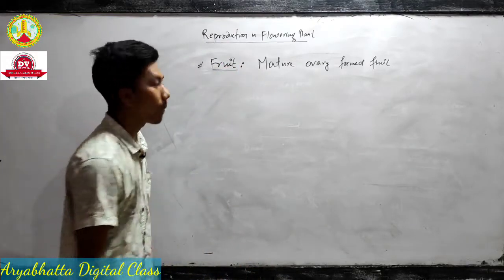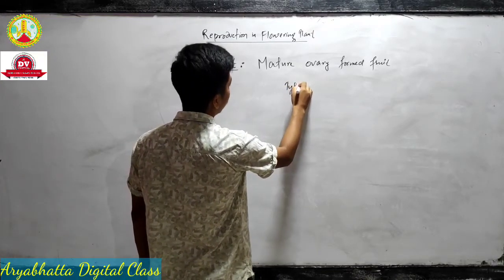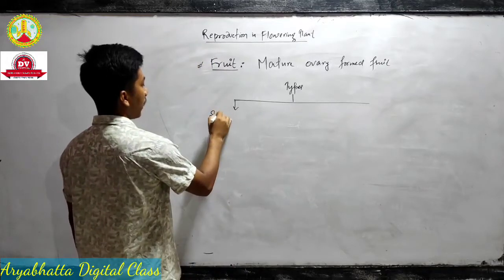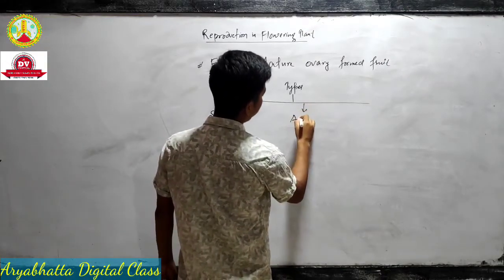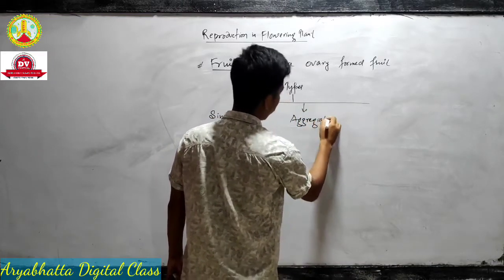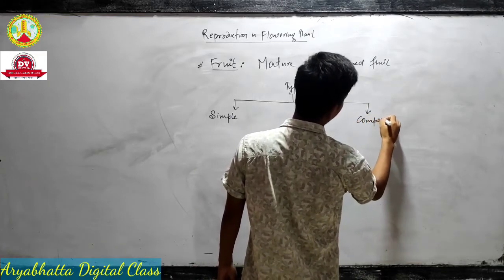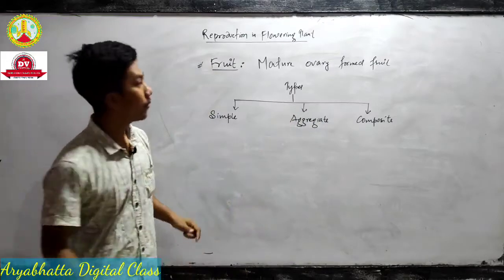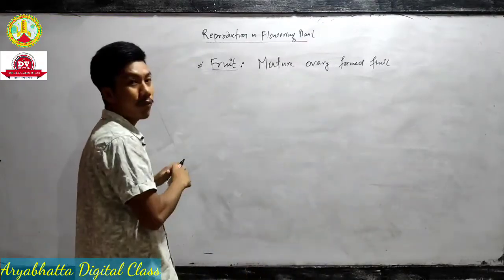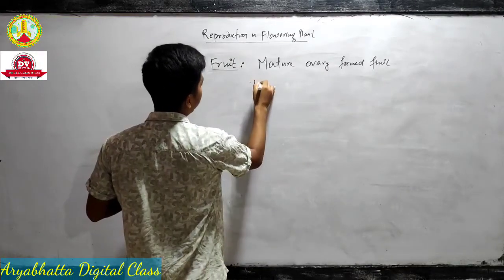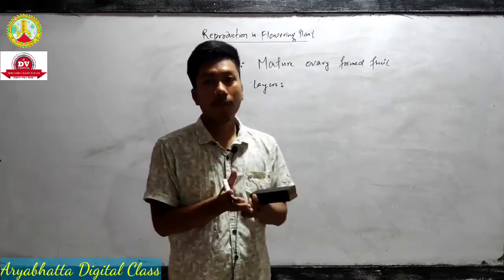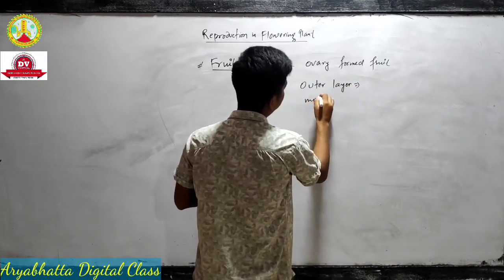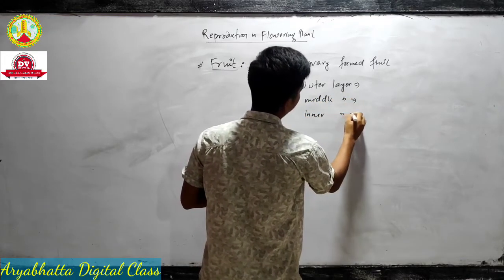Next we need to know the types of fruit — we have already discussed this in morphology of flowering plants in first year. We have simple fruit, aggregate fruit, and composite fruit. Before going to the types of fruit, we need to know the layers of the fruit — the outer layer, the middle layer, and the inner layer.